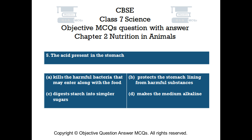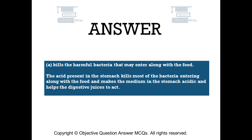Question number 5. The acid present in the stomach: Option A: Kills the harmful bacteria that may enter along with the food. Option B: Protects the stomach lining from harmful substances. Option C: Digests starch into simpler sugars. Option D: Makes the medium alkaline. The right answer is Option A. The acid kills most bacteria entering with food, makes the medium acidic, and helps the digestive juices to act.